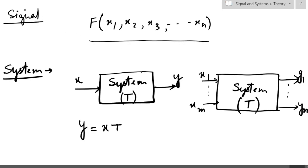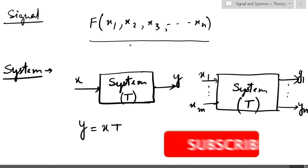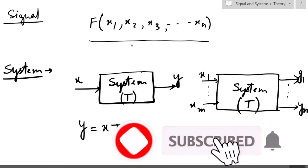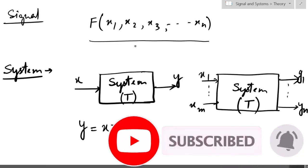In this lecture we have seen what is a signal and what is a system. In our next video we will see about the types of signals: continuous-time signal, discrete-time signal, deterministic signal, and non-deterministic or random signal. Thank you for watching — if you have any questions, please put them in the comment section below. Also like, share, and subscribe to my channel.